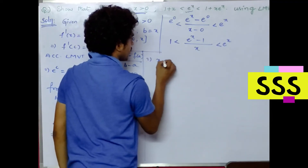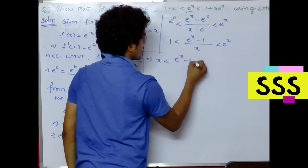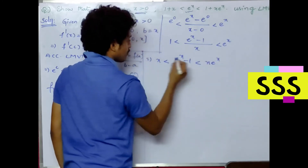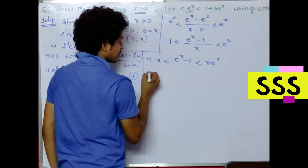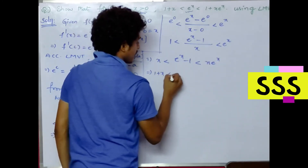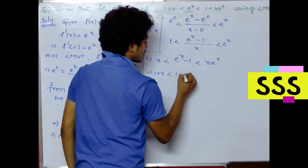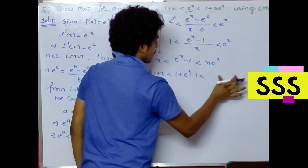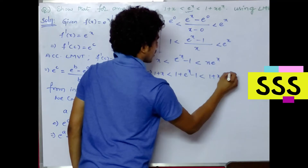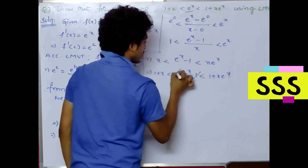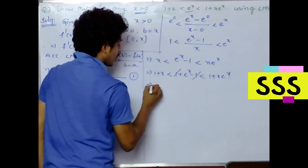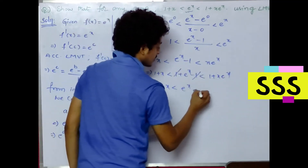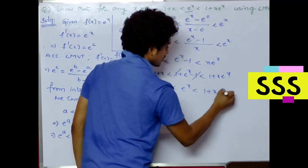Multiplying all terms by x: x is less than e^x minus 1, which is less than x into e^x. Adding 1 to all parts: 1 plus x is less than e^x is less than 1 plus x into e^x.